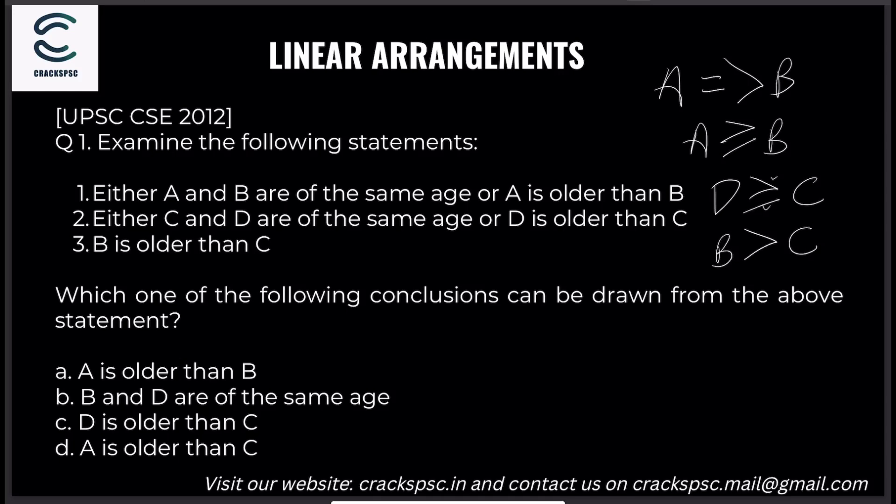Which one of the following conclusions can be drawn from the above statements? Option: A is older than B — we have A greater than or equal to B. B and D are of the same age.